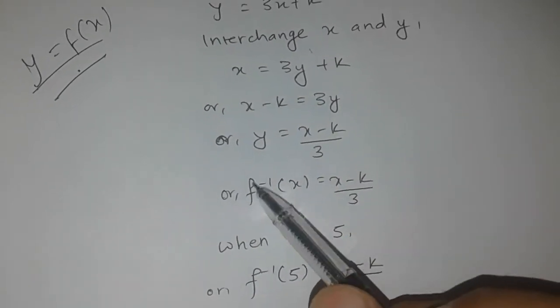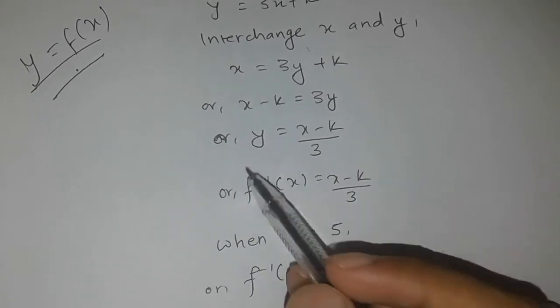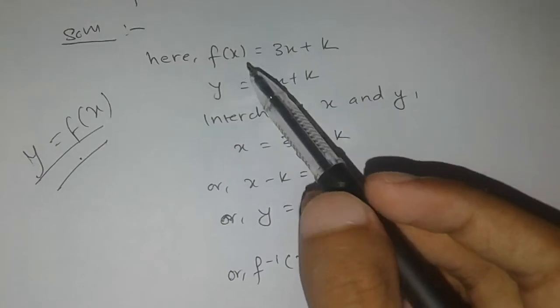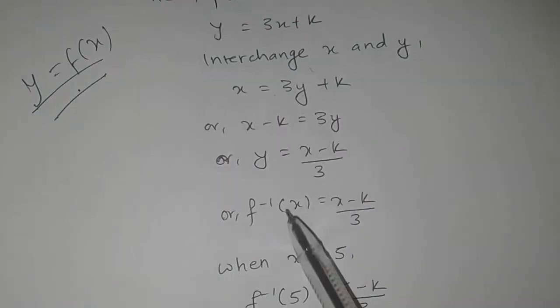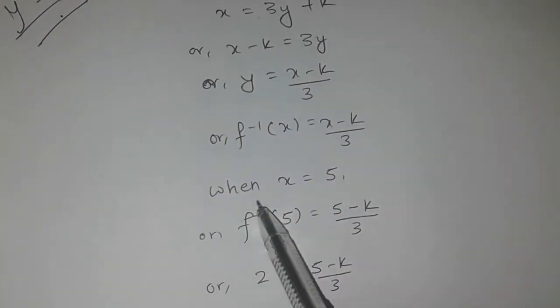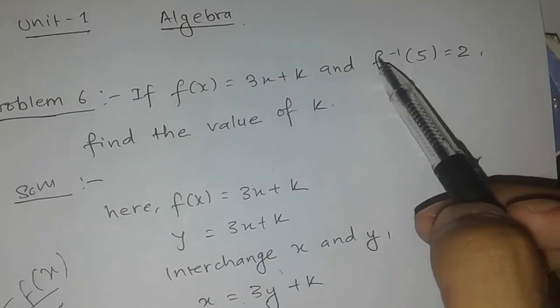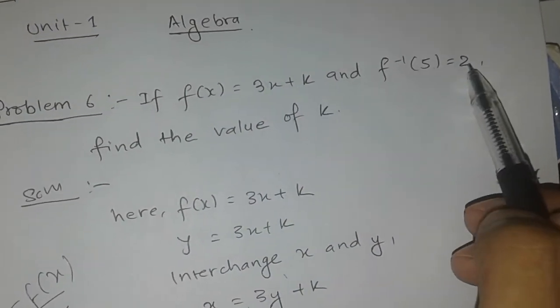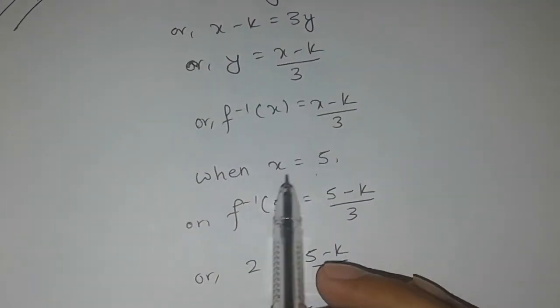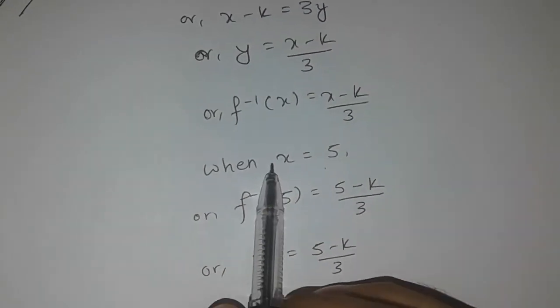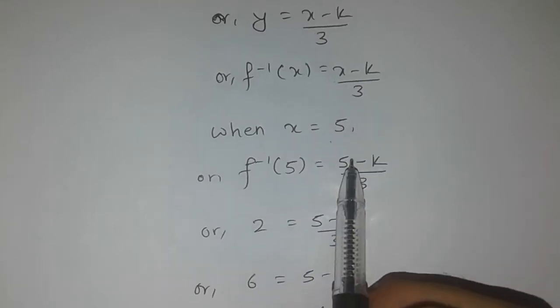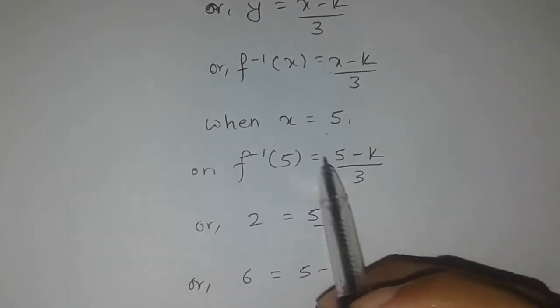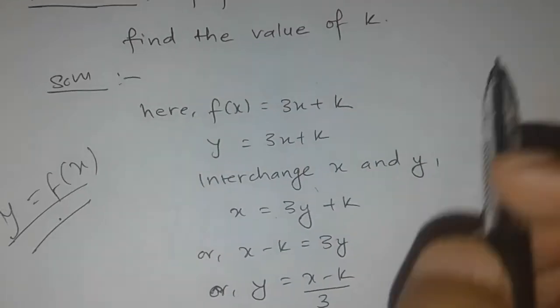Since we have f inverse x, and we're given that f inverse of 5 equals 2, we substitute: f inverse of 5 equals 5 minus k divided by 3, which equals 2.